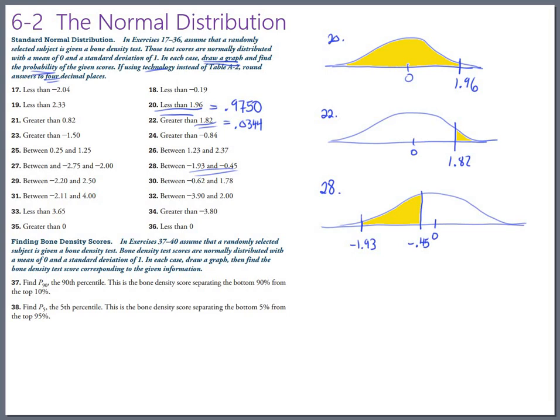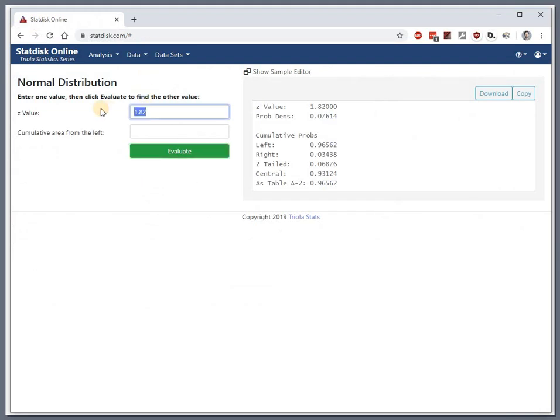And again, this will have to be that two-step process where we figure out the total area to the left of 0.5. And then subtract off this little bit to the left of 1.93. Okay. So total area to the left of 0.45, sorry, negative 0.45, negative 0.45. To the left of that is 0.3264.